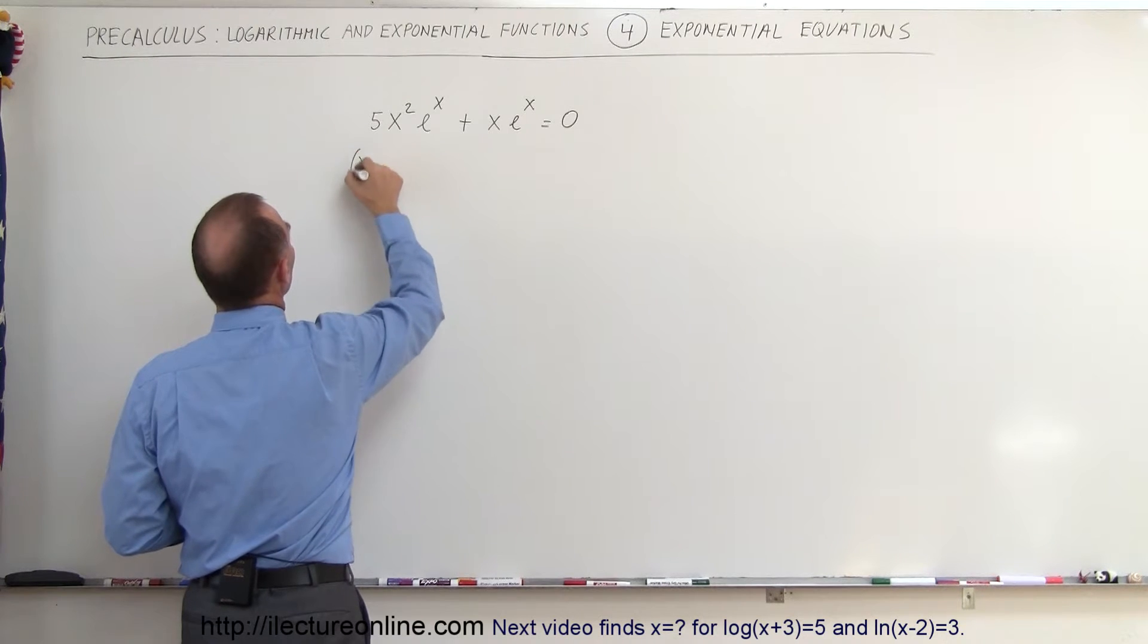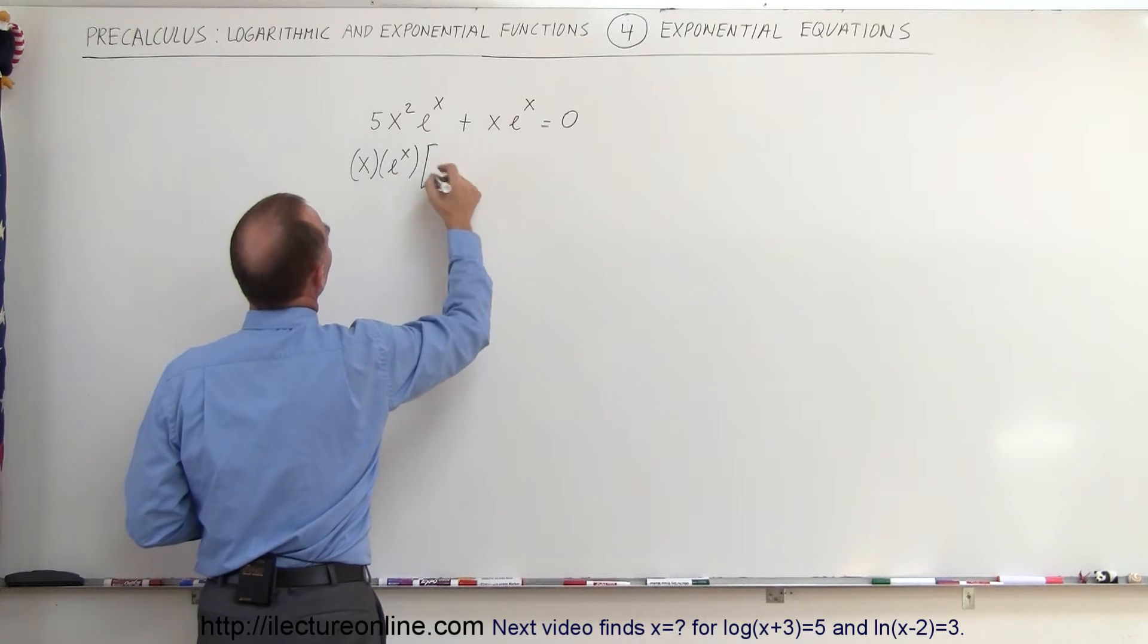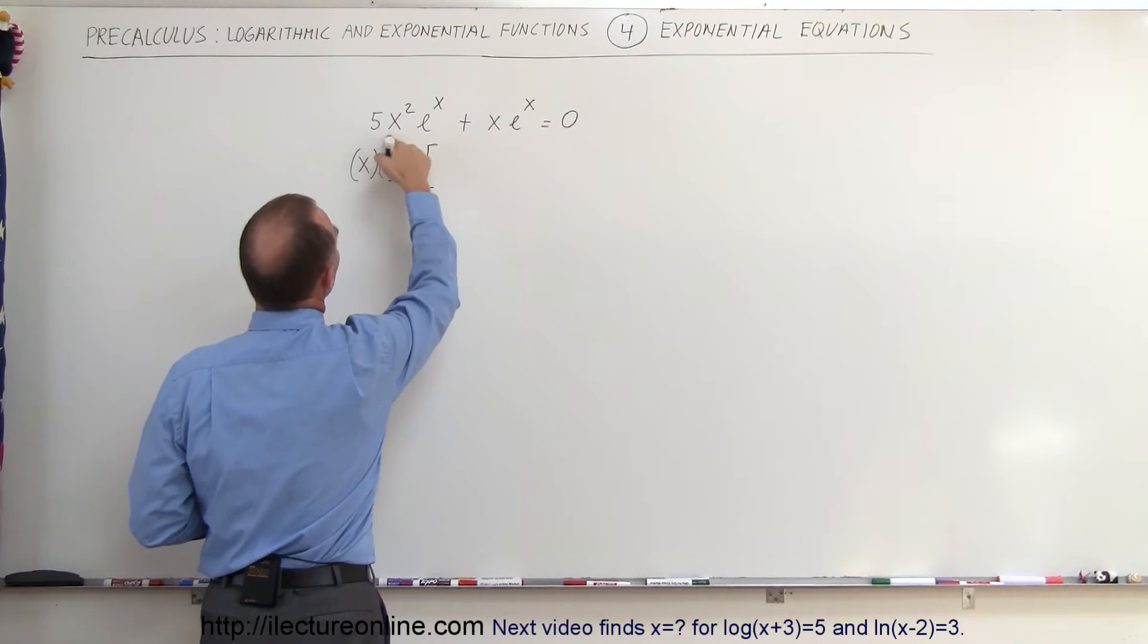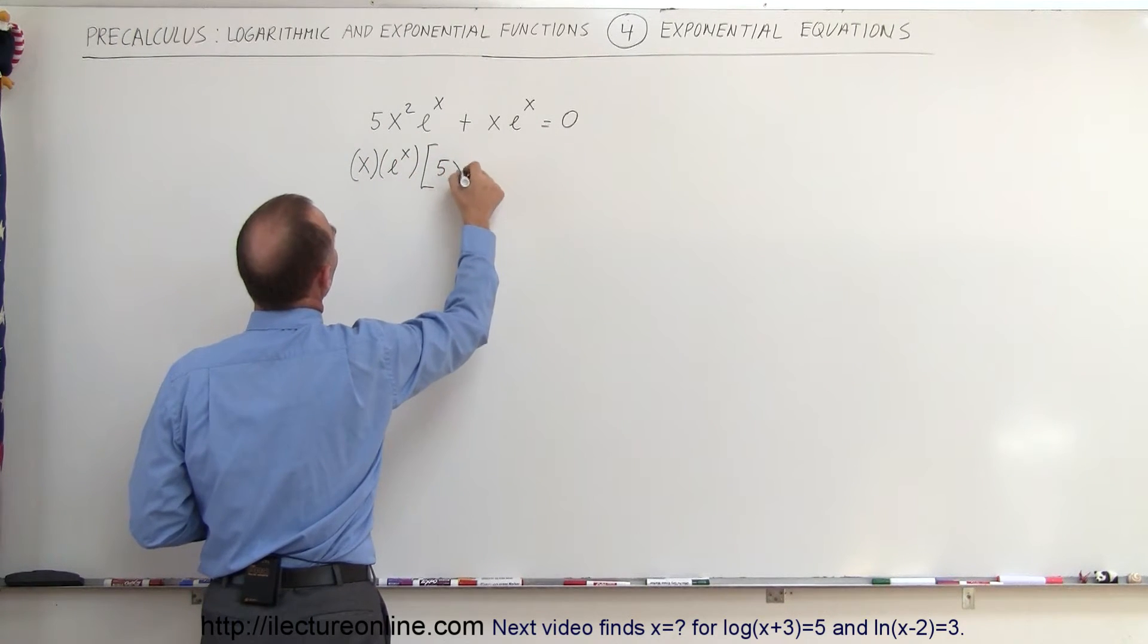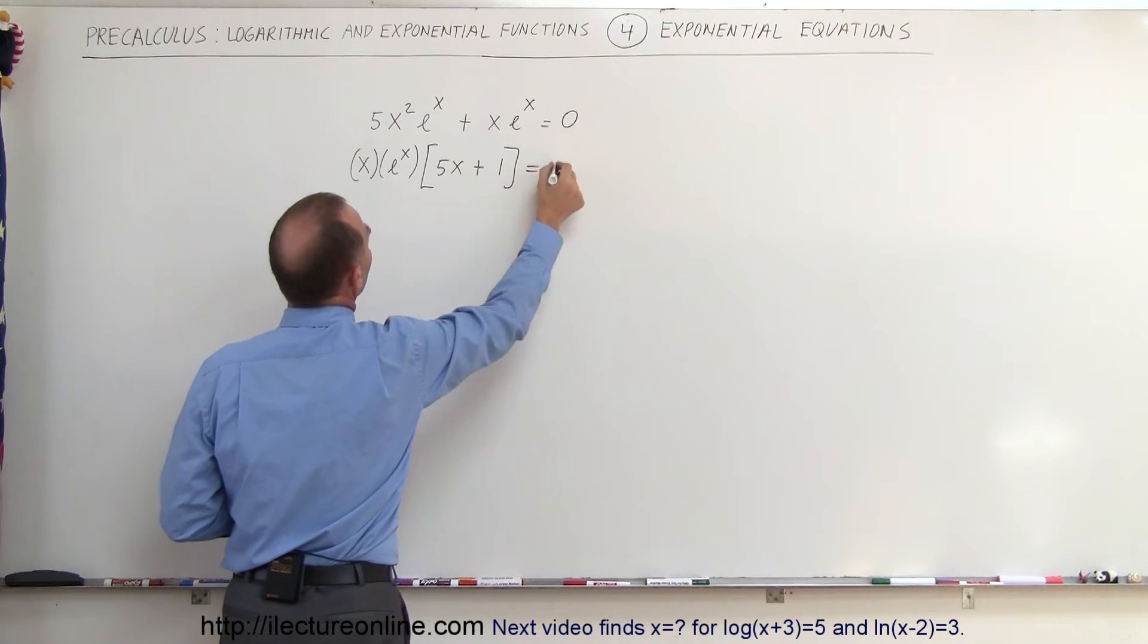So we can write the following. We can say x multiplied times e to the x multiplied times what's left on the left side here. On this term it's 5 times x plus on the right side we simply get plus 1 and that equals 0.